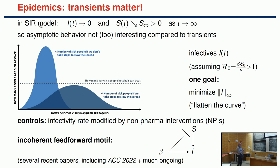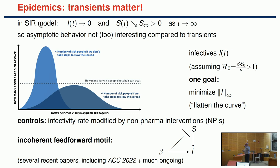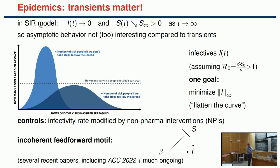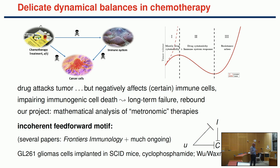You can look at the SIR system and think of beta—related to how transmissible the disease is—as a control parameter. As you increase the transmissibility rate, you increase the number of infectives, but you also have fewer susceptibles because they became infected. The susceptibles, in turn, the more you have, the more infectives you get. This is what is called an incoherent feedforward loop: beta affects S negatively, S affects I positively, but beta also affects I positively directly.